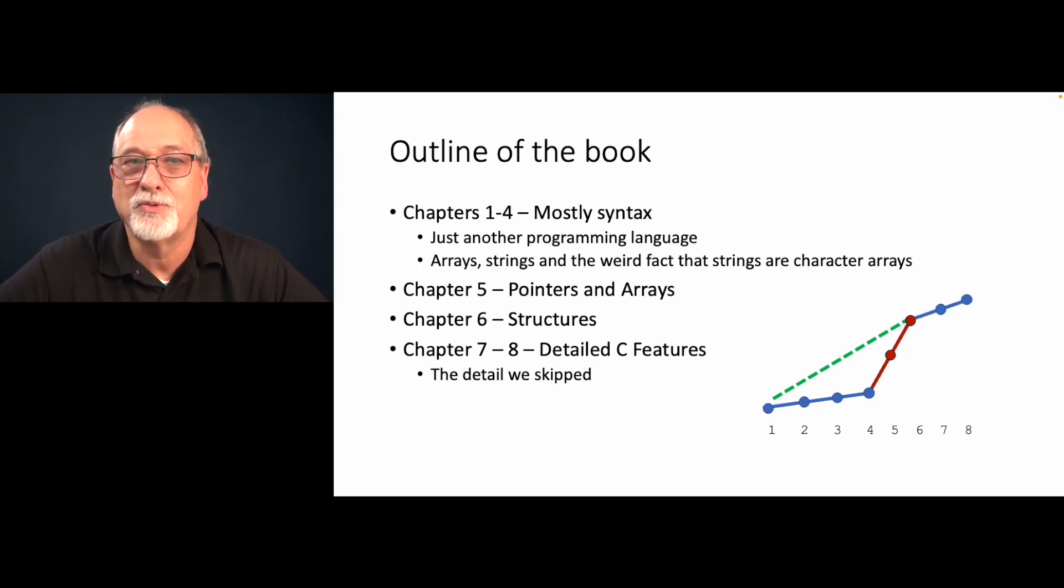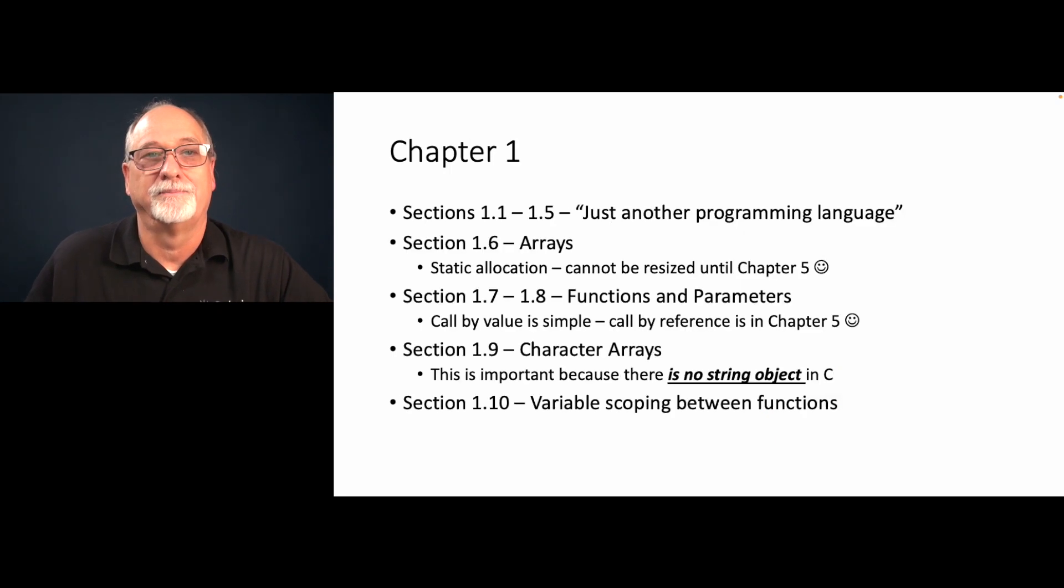Don't give chapters one through four short shrift because five and six are going to just go woo. Then seven and eight is just sort of filling in detail and are not so critical. That's the outline of the book. Just expect that one through four is going to be smooth and then five and six are like now we're really getting somewhere.